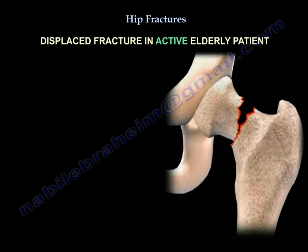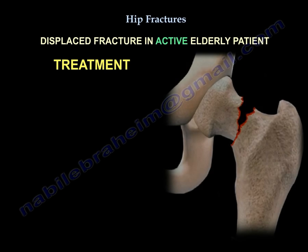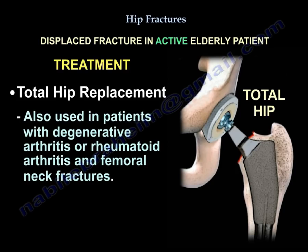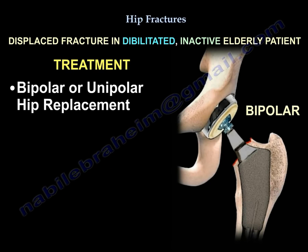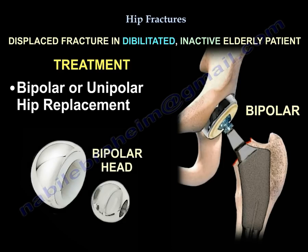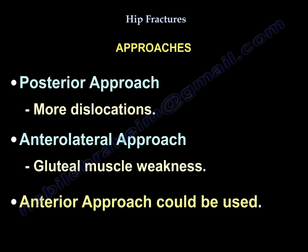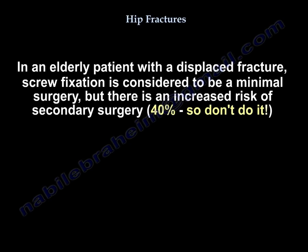Displaced fracture in an active elderly patient is treated by total hip replacement for better function, though there is a higher risk of dislocation. THR is also used in patients with degenerative or rheumatoid arthritis and femoral neck fractures. For a displaced fracture in a debilitated elderly patient, use bipolar or unipolar hemiarthroplasty. Regarding approaches: posterior approach has more dislocations, anterolateral approach causes gluteal muscle weakness, or use the anterior approach. Screw fixation in an older patient with a displaced fracture carries a 40% risk of secondary surgery — avoid it.